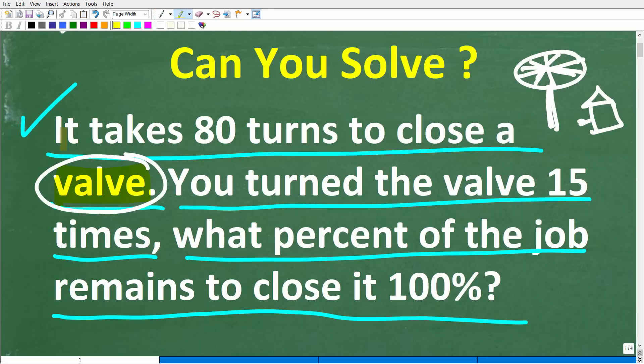Now, in this particular case, it takes 80 turns to close this valve. Now, we need to kind of make an assumption here, and that is that the valve is 100% open, right? So this valve is completely open. So to completely close it, it takes 80 turns. All right, now you turn the valve 15 times, what percent of the job remains to close this valve 100%?